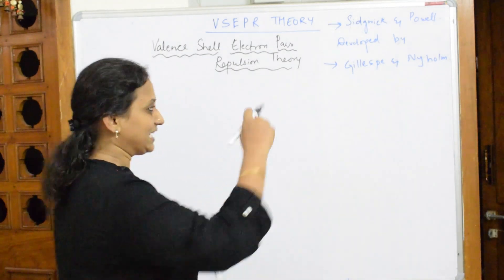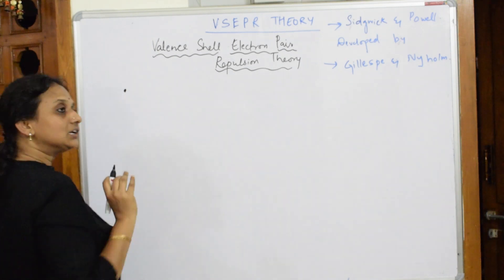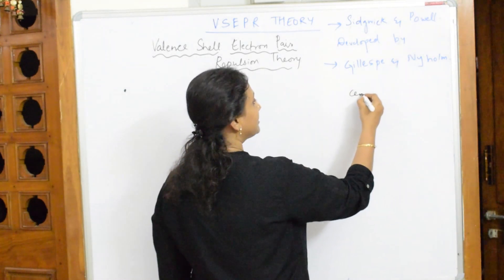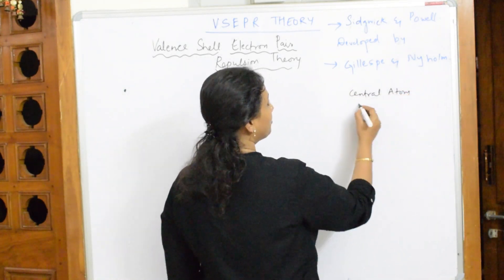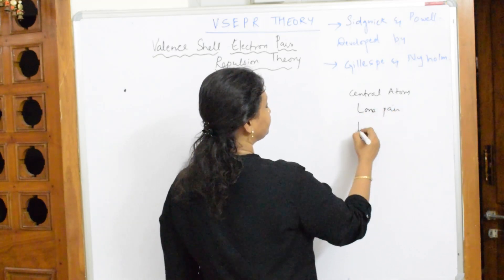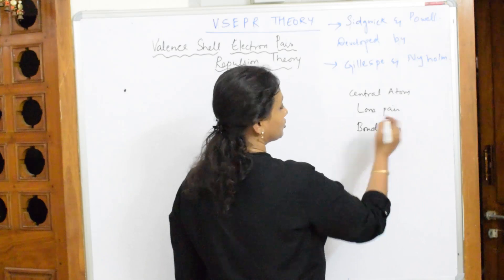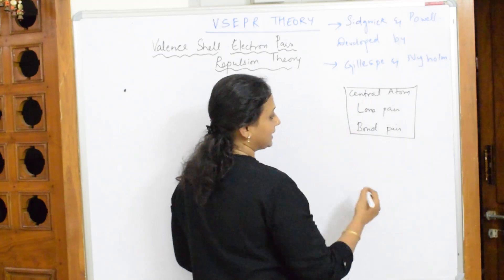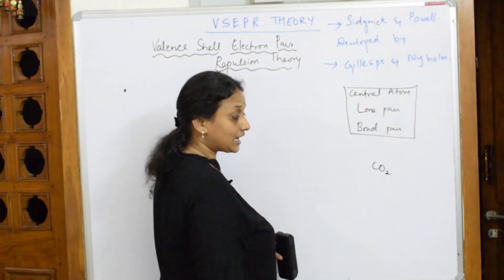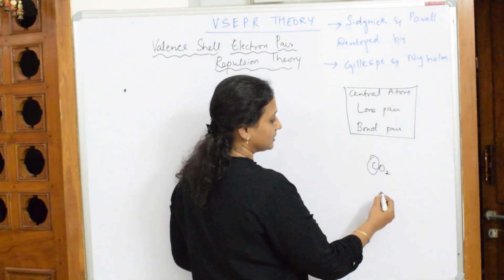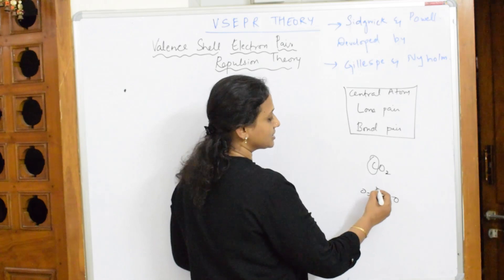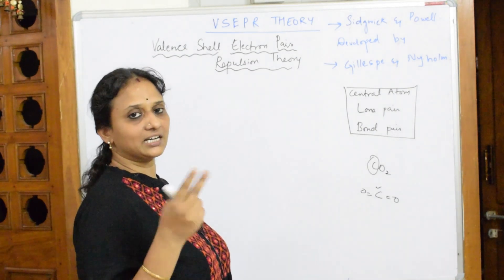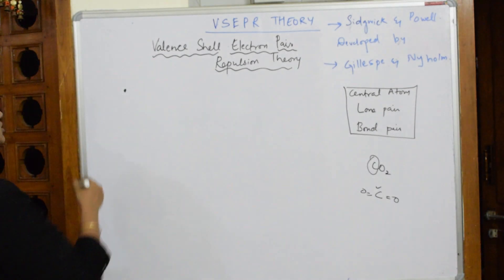The postulates of VSEPR are quite straightforward. Whenever you speak about valence shell in VSEPR, you must think in terms of three things: the central atom, lone pairs, and bond pairs. The central atom is the atom around which other atoms are linked — for example, in carbon dioxide, carbon is the central atom.